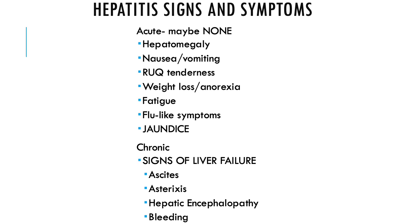And then jaundice — that yellowing we can see in the sclera, called scleral icterus, or in the skin in general. Overall, the acute signs, if present, tend to be those generalized flu symptoms along with some jaundice and GI symptoms.